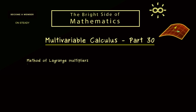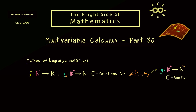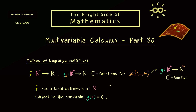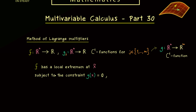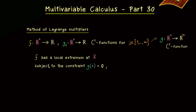Let's start by recalling what we learned in the last video. The method of Lagrange multipliers searches for extrema of a function f under constraints given by functions g. We can put these constraints into a single vector-valued function g. The crucial ingredient is that all functions involved are at least C1 functions. This method gives us a necessary condition for having a local extremum for f at a given point, subject to the constraint g equal to zero, but it only works for points where the rank of the Jacobian of g is maximal — given by m.